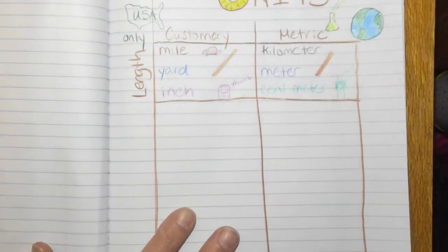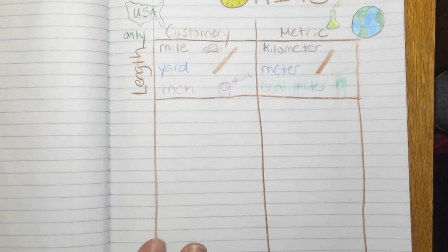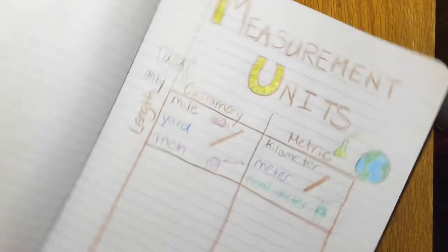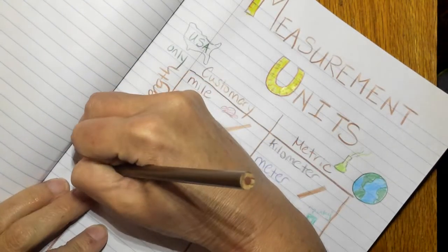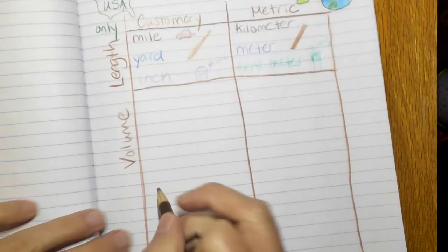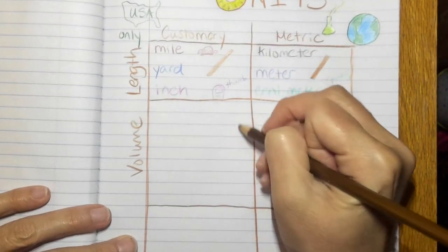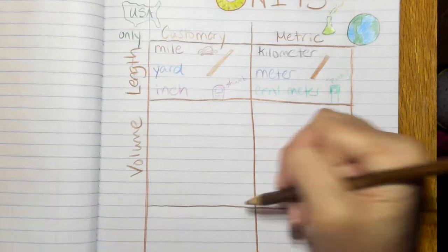So those are your units of length. Next up we're going to talk about volume. And that's probably going to be our biggest section. So I'm going to start that pretty far down. I'm actually going to give it one, two, three, four, five, six, seven, eight, nine lines.